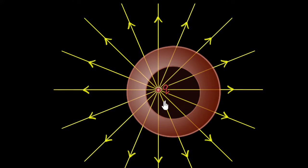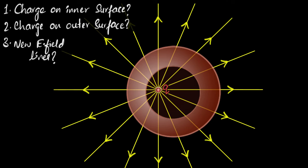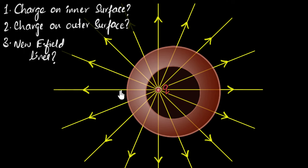So the question is, once all the electrons have stopped moving and we have reached electrostatic condition, we have to answer three questions: What will be the total charge on the inner surface and how will it be distributed? What will be the charge on the outer surface and how will it be distributed? And what would the new electric field lines roughly look like?